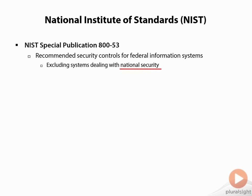Systems dealing with national security infrastructure have a higher level of security specifications. But for systems outside of that within the federal government, the special publication SP 800-53 deals with information security controls that you should be aware of, because they can apply or at least give you a very solid set of guidelines that you can apply in your own organizations or for your own information.